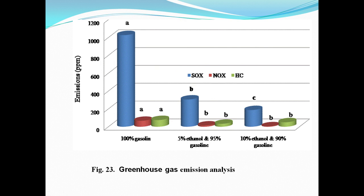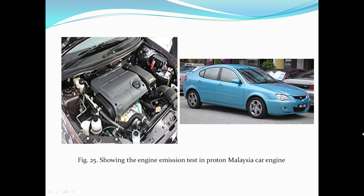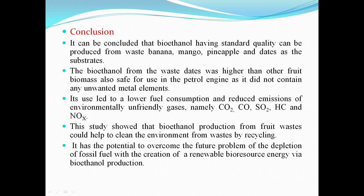We can see different types of emissions were determined and positive results were obtained. In conclusion, it can be concluded that bioethanol of standard quality can be produced from waste banana, mango, pineapple, and dates. The bioethanol yield from waste dates is higher than from other fruit biomasses. The bioethanol is also safe for use in petrol engines and does not introduce any unwanted metal elements.